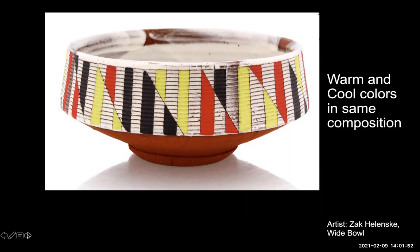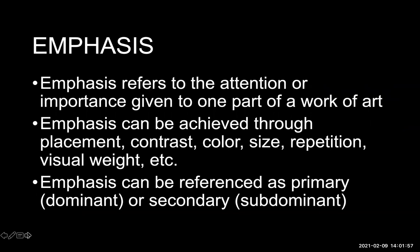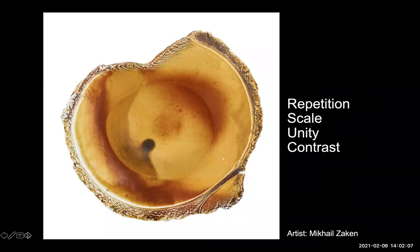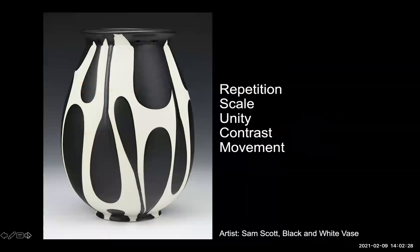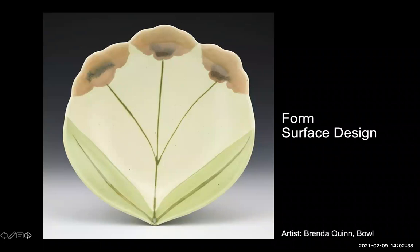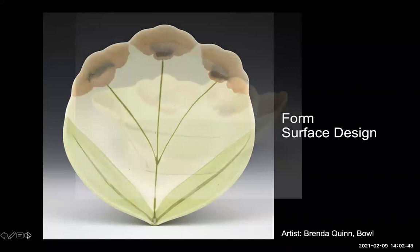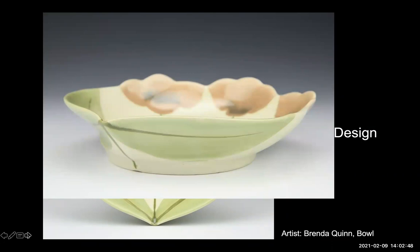Emphasis refers to the attention or importance given to one part of a work of art. Emphasis can be achieved through placement, contrast, color, size, repetition, visual weight, etc. Emphasis can be referenced as primary or secondary. While the platter itself is rather large, the dark dot off the center of the plate commands our attention due to its contrast with the rest of the platter. The shape of a circle is repeated three times: the dot is a circle, the interior of the platter creates a circle, and the rim of the platter is an implied circle. While the all-over pattern may not provide a single focal area, it emphasizes the bulbous shape of the vessel. In this piece, the surface design of the flowers is emphasized by the form of the bowl, and the form is emphasized by the surface design simultaneously.